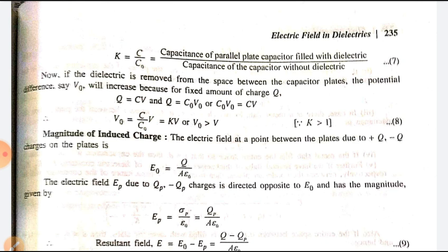If the dielectric is removed from the space between the capacitor plates, the potential difference V₀ will increase because of the fixed amount of charge Q. So Q = CV and Q = C₀V₀, giving C₀V₀ = CV. From this we get V₀ = (C/C₀)V = KV, and since K is greater than 1, V₀ is greater than V.